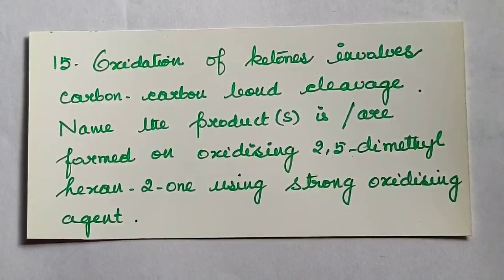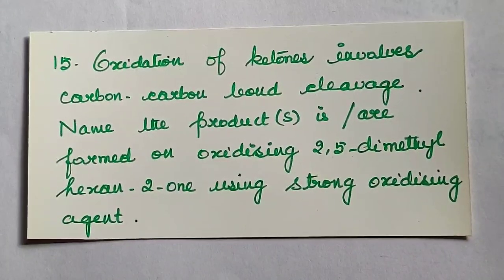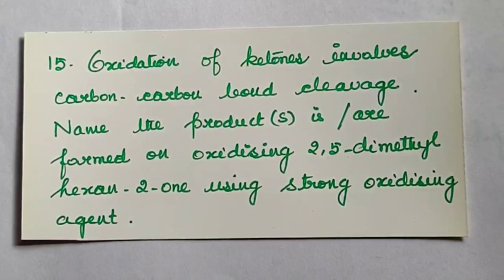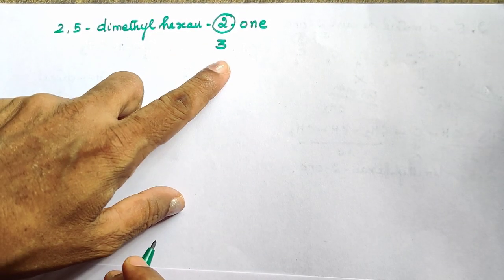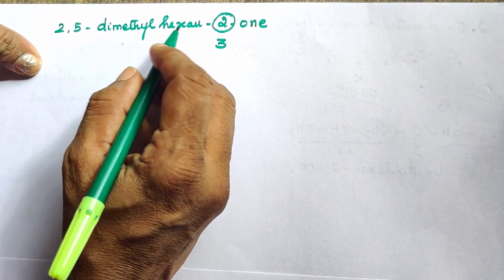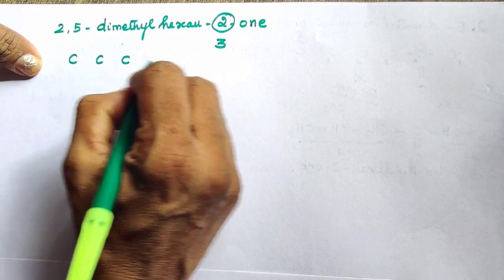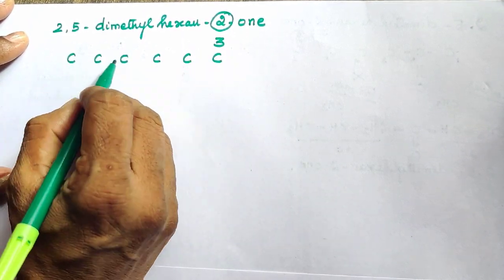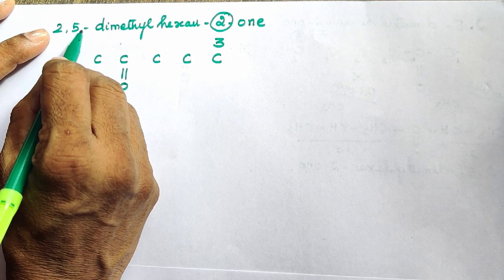The ketone is in the second position. If you say there is 2,5-dimethyl, then you can't have the ketone carbon substitute with two alcohol groups attached. If you use 2,5-dimethylhexan-2-one, then you can use hexan-2-one or hexan-3-one. Let's write the compound: 2,5-dimethylhexan-2-one.